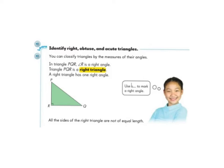A right triangle will only have one right angle, and we can mark our right angle by drawing a little square in the corner.